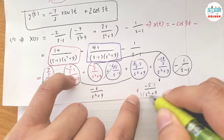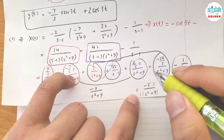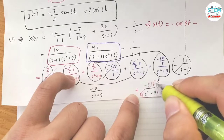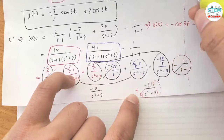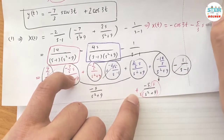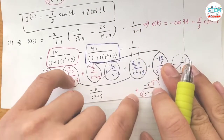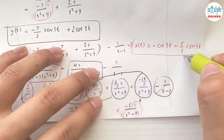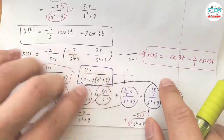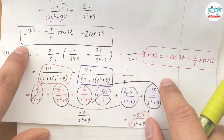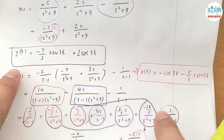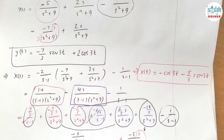For the sine term, you need a 3 in the numerator, so we get negative 5/3 times sin(3t). So x(t) equals negative cos(3t) minus 5/3 sin(3t). This is your equation for x(t), and y(t) was found earlier — together these form the complete final solution to the system.